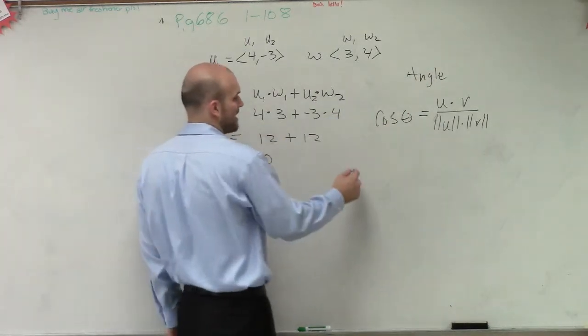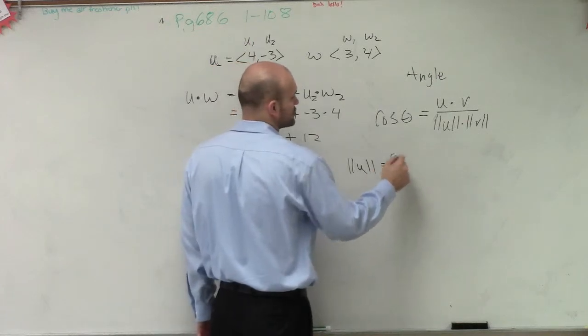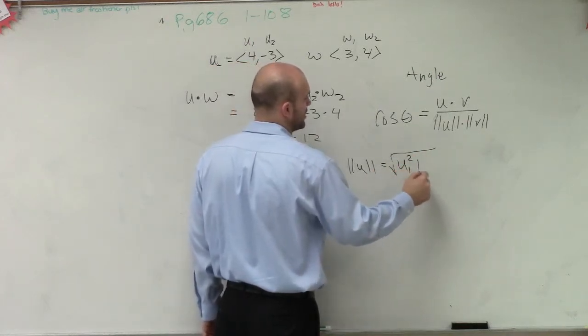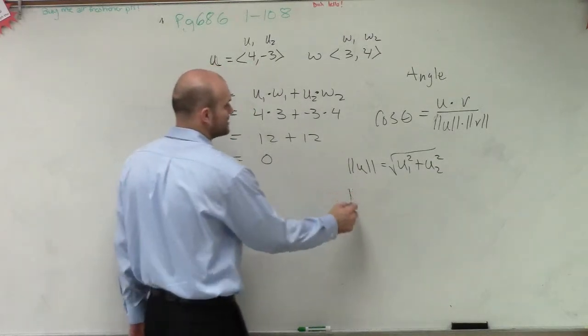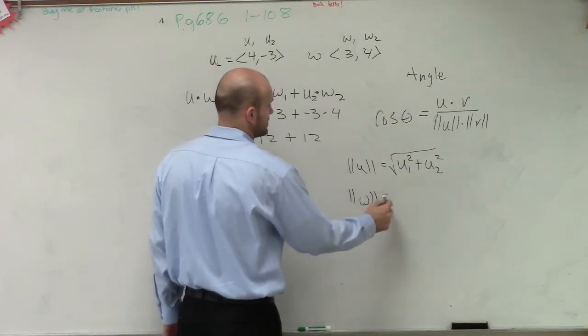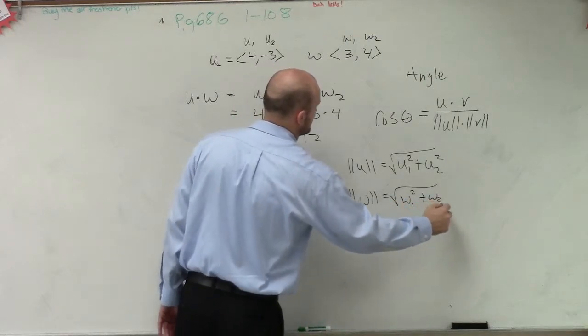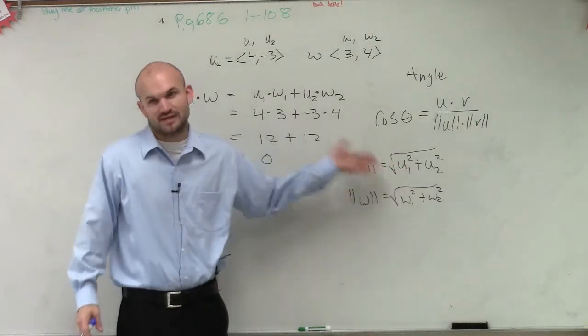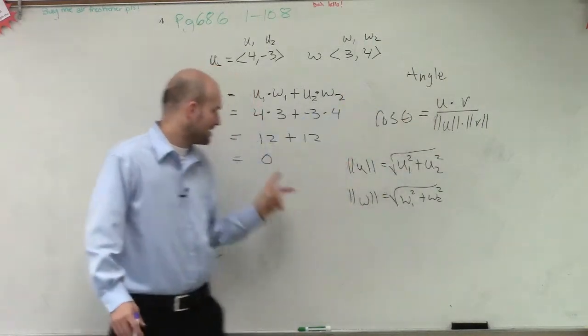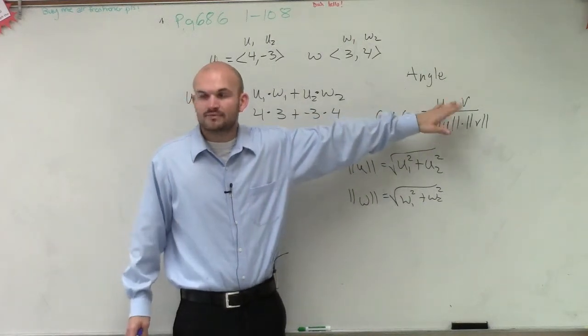The magnitude of vector u is equal to the square root of u1 squared plus u2 squared. And the magnitude of w is equal to the square root of w1 squared plus w2 squared. That's what we'd have to do if we wanted to find the magnitude, then multiply them together. But since we already have 0, we know the result will be 0.